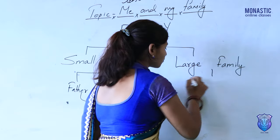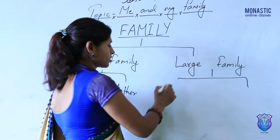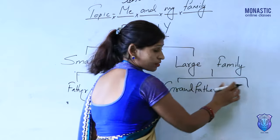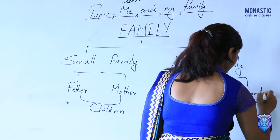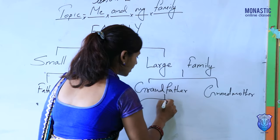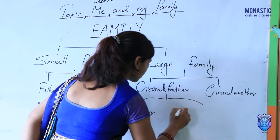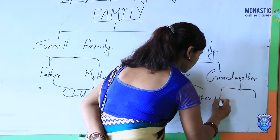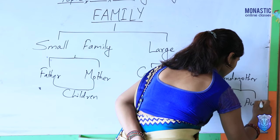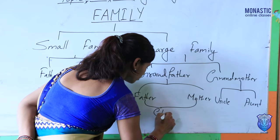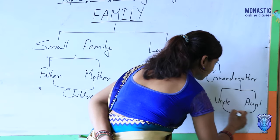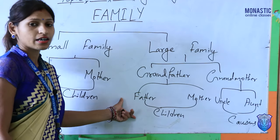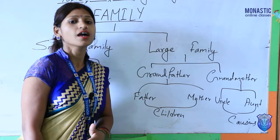In large family, there are lots of family members: grandparents — grandfather and grandmother — your parents, father and mother, and also uncle and auntie. Father's and auntie's children, meaning your cousins, also live together. By this way, they have a lot of family members, so it is a large family.